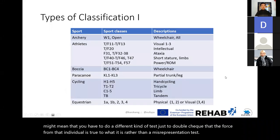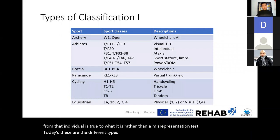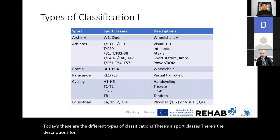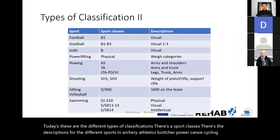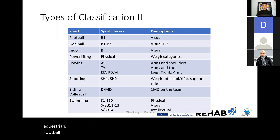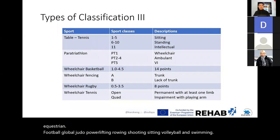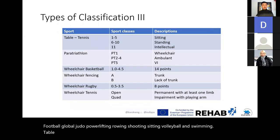There are different types of classifications and descriptions for different sports: archery, athletics, boccia, power canoe, cycling, equestrian, football, goalball, judo, powerlifting, rowing, shooting, sitting volleyball, swimming, table tennis, power triathlon, wheelchair basketball, wheelchair fencing, wheelchair rugby, and wheelchair tennis.